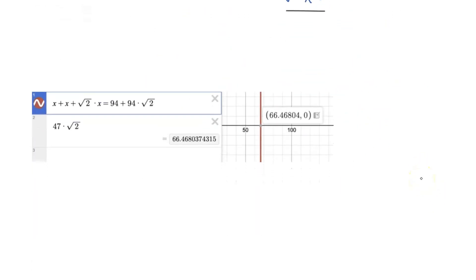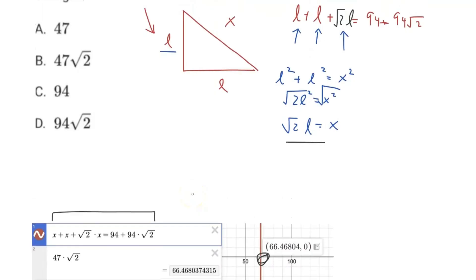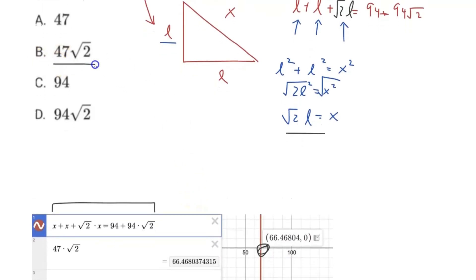So you can see down here, this is what I've done in Desmos. I've just put in what we had over here, and then found the solution, which is 66.46804. And looking at our answer choices, we can see it lines up with 47 times square root 2. 47 times square root 2 down here is also 66.468037. That rounds to 4 there.